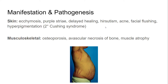Other skin manifestations include hirsutism, acne, facial flushing, and hyperpigmentation. Hyperpigmentation is only seen in secondary Cushing syndrome. The reason is that ACTH shares the same precursor molecule as melanocyte-stimulating hormone, so every time ACTH is produced, melanocyte-stimulating hormone is also released, which stimulates melanocytes to produce melanin, causing the hyperpigmentation. It is not seen in primary Cushing syndrome because ACTH levels are suppressed in that case.